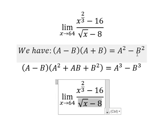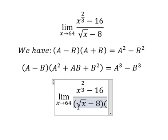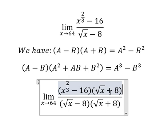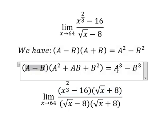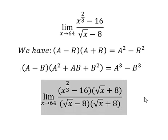For the first case, we want to create a² - b², so we need to multiply by (a + b) on both the numerator and denominator. For the second case, we want to create a³ - b³, so we need to multiply by (a² + ab + b²) on both the numerator and denominator.